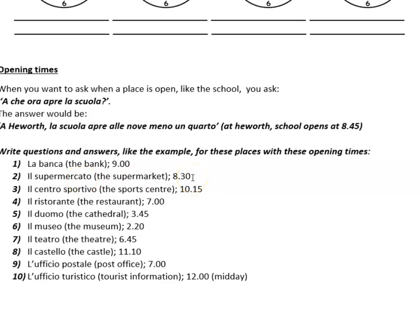Number two: il supermercato apre alle otto e mezza. Number three: il centro sportivo apre alle dieci e un quarto. Number four: il ristorante apre alle sette. Number five: il duomo apre alle quattro meno un quarto. Number six: il museo apre alle due e venti. Number seven: il teatro apre alle sette meno un quarto. Number eight: il castello apre alle undici e dieci.